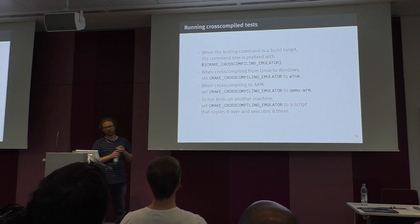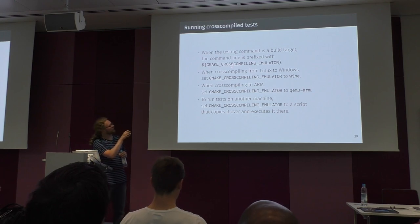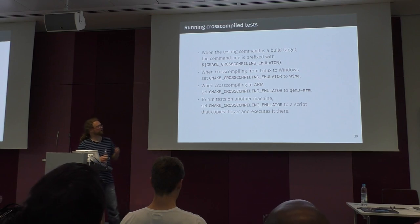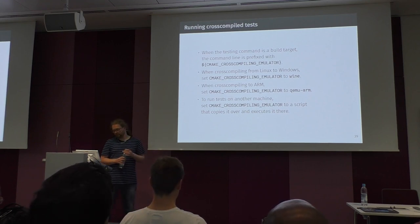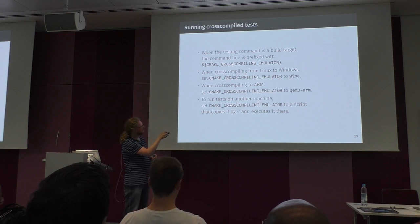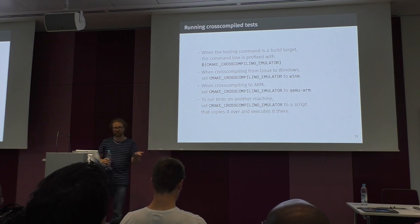When you cross-compile for a different platform, there's the interesting variable CMAKE_CROSSCOMPILING_EMULATOR. It's a good place to set this in the toolchain file. For example, set it to wine when cross-compiling from Linux to Windows, or to QEMU when cross-compiling to ARM. You can also set it to a script that copies the binary to another machine and executes it there.